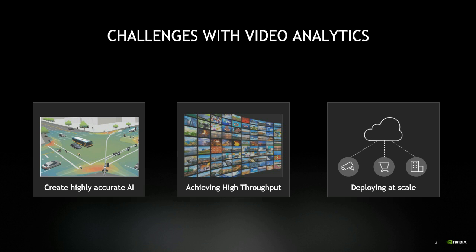Number one: to create an intelligent system you need AI, and creating highly accurate and reliable AI is difficult. It's an iterative process that requires a lot of good labeled data, and obtaining this data is time-consuming and expensive. Models are trained and retrained continuously. The second challenge is achieving high throughput, especially on the edge — due to bandwidth limitations, you want to process as much as possible on the edge and only send vital information upstream.